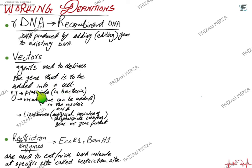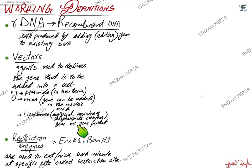Vectors are the agents used to deliver the gene that is to be added into a cell. Vectors could be, for example, plasmids of bacteria, viruses — by adding the gene to their existing nucleic acid — or liposomes, which are artificial vesicles of phospholipids. They can be used to carry the gene or gene product and deliver the gene to the cell, where it can then be incorporated.